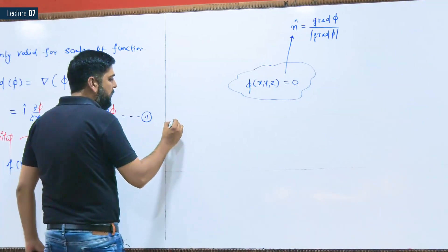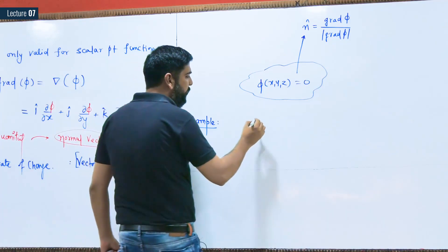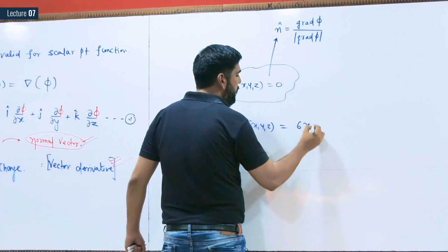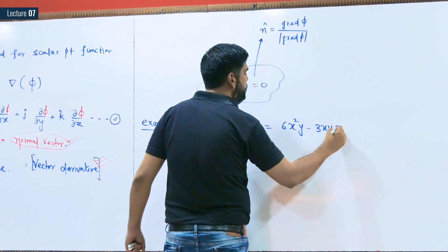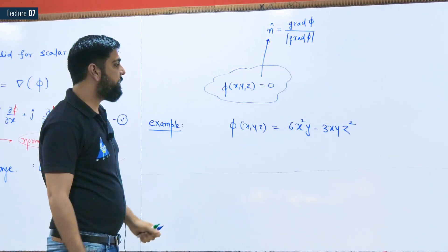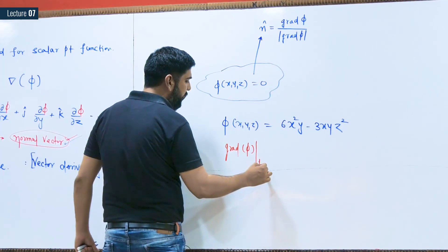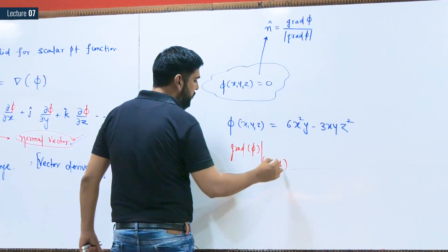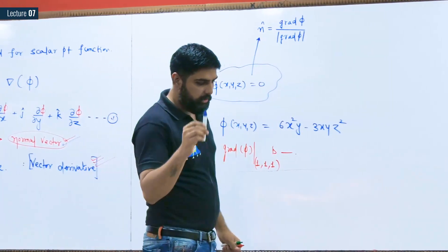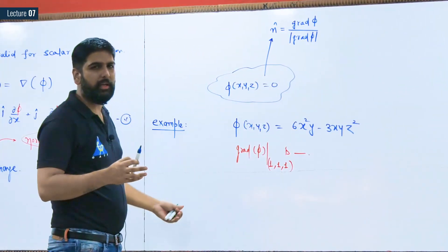Let's have an example for gradient. I have the scalar point function phi(x, y, z) = 6x²y − 3xyz². We need to find the gradient of phi at the point (1, 1, 1). Remember, the result of gradient is a vector quantity — it cannot be a simple numerical answer, but we are taking this as an example.